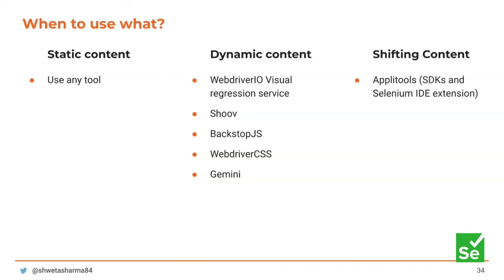When to use which tool: for static content, any of the mentioned tools will work. For a lot of dynamic content, you can use the WebdriverIO visual regression service or BackstopJS with the hide/remove strategies we saw. For shifting content — like a portal where the username changes based on login — I would recommend going with Applitools.